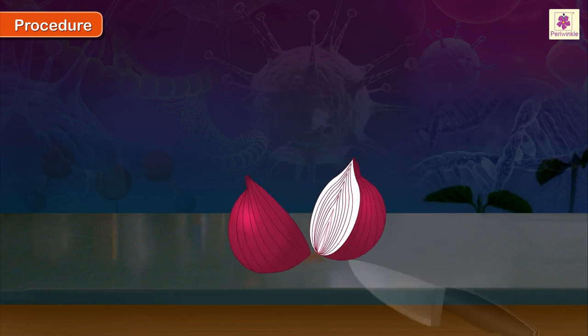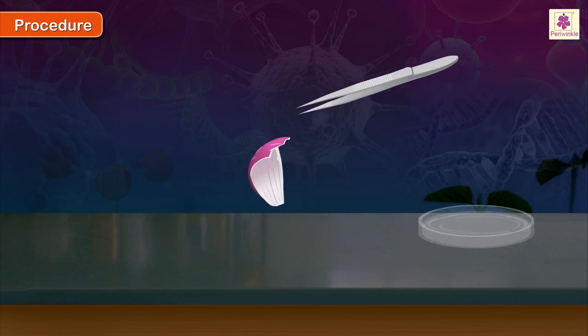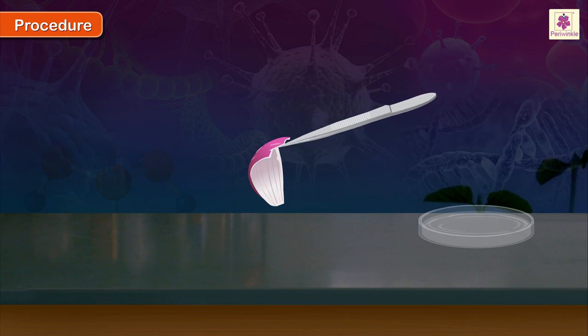Carefully cut an onion and take a piece of a thick fleshy leaf. Use forceps to gently remove the thin membrane-like transparent peel from the inner concave side of the leaf.